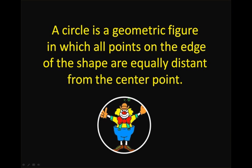So what is a circle? A circle is a geometric figure in which all points on the edge of the shape are equally distant from the center point. If we take a line from the center — from the clown's stomach, which is near the center of the circle — and draw it over to the edge, that will be equal to another line. It's always the same from the center point to the edge. And that defines our circle.